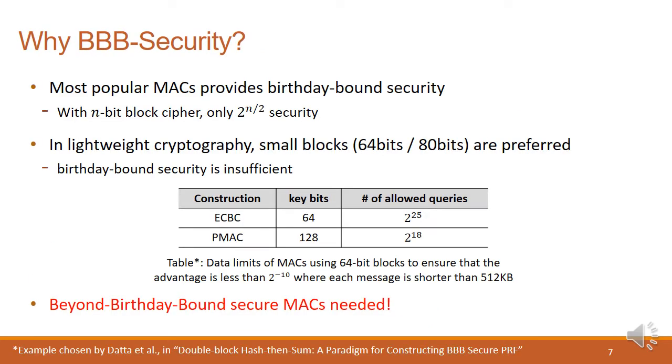There are a lot of proposed MACs with security proof, but most of them only provide birthday-bound security. However, in some cases, we need beyond birthday-bound security. For example, in lightweight cryptography, we're likely to use block ciphers of a smaller block size such as 64 bits or 80 bits. However, when we use these small block sizes, birthday-bound security becomes insufficient. In the table, you can see that if we use 64-bit block ciphers, the number of allowed queries on ECBC is up to 2 to the 25, while the number of allowed queries on PMAC is 2 to the 18. These are too small to use in practice, so beyond birthday-bound security is needed.